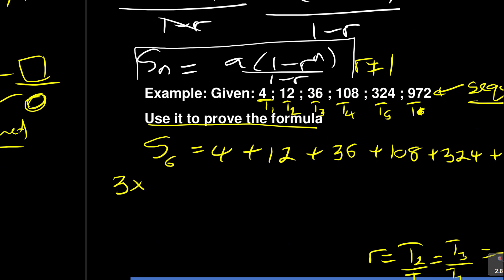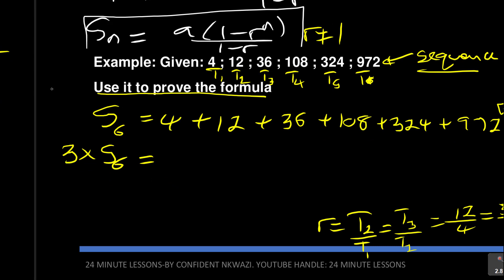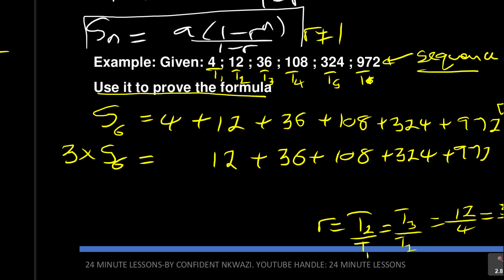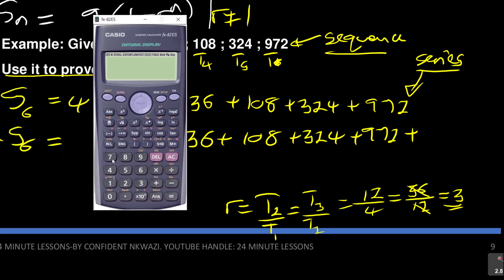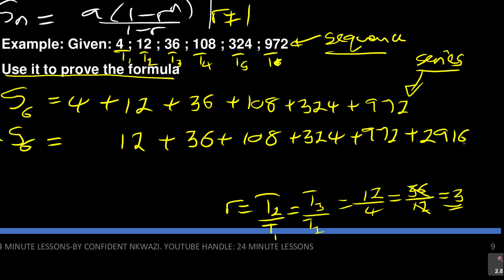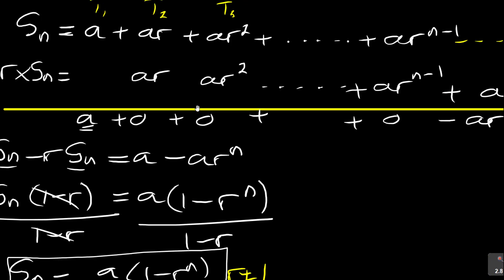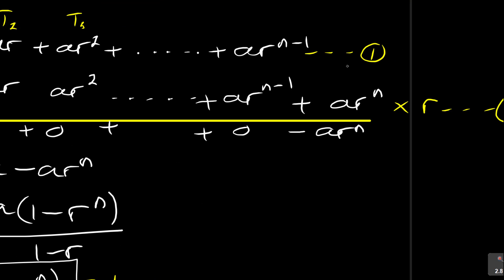Take r = 3 and multiply by S6. When I multiply 3 times 4, I get 12 — matched with the existing 12. Then 3 times 12 = 36, matched with 36. Then 36 times 3 = 108, plus 324, plus 972. But it doesn't end there — 972 times 3 = 2916, which is an extra term at the end. Just like in the general derivation, the top was blank and we have this extra term.